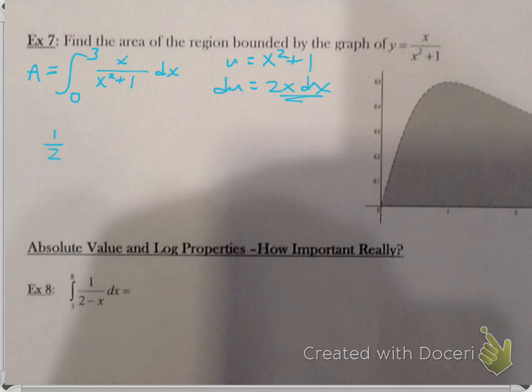Seems to be the theme today. So the area will be 1 half the integral of 1 over u, du. So 1 half ln of the absolute value of x squared plus 1. And then, of course, we're going to evaluate that from 0 to 3.